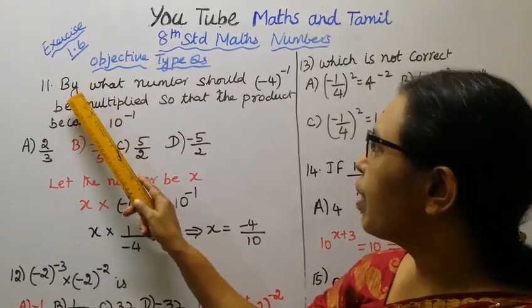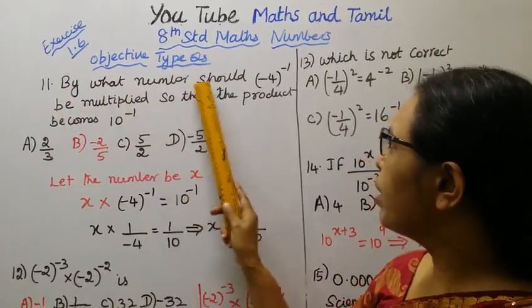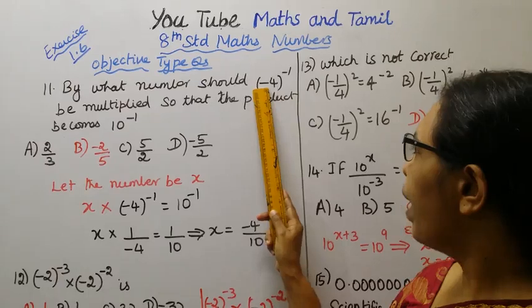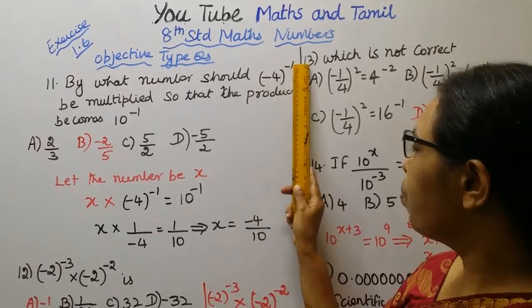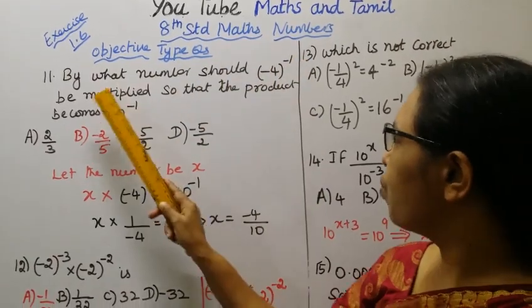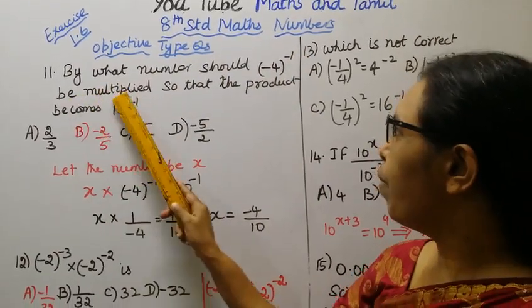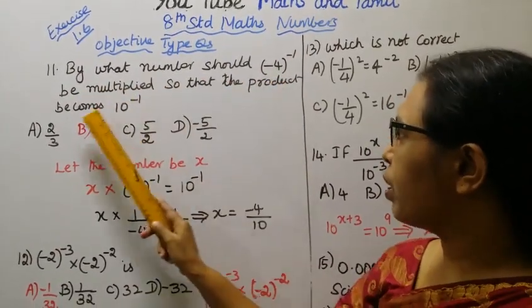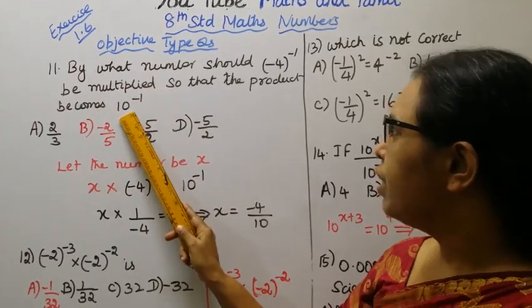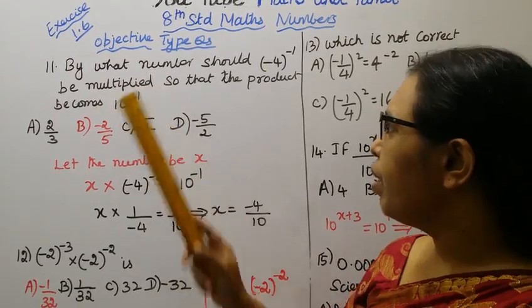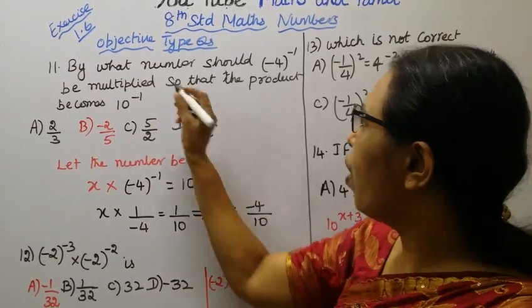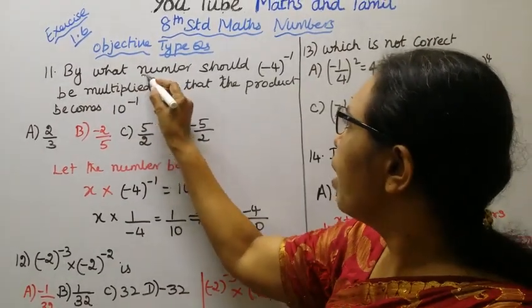11th sum: By what number should minus 4, the whole power minus 1, be multiplied so that the product becomes 10 power minus 1? By what number?